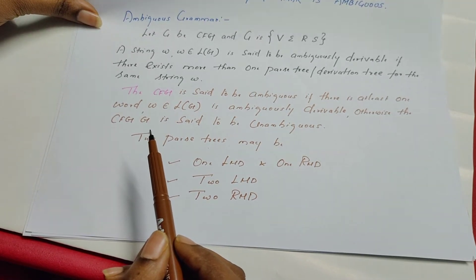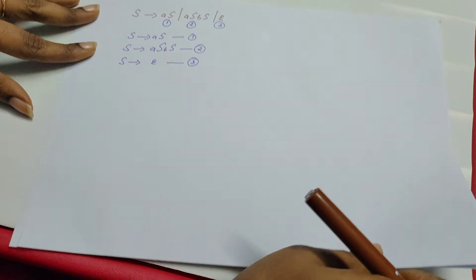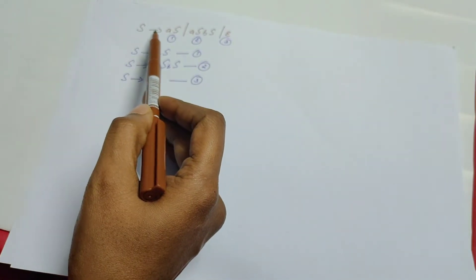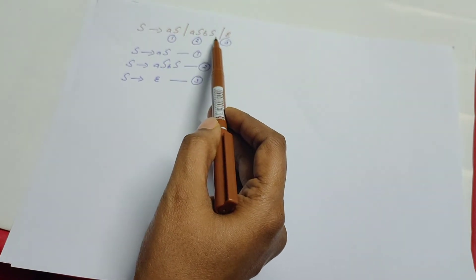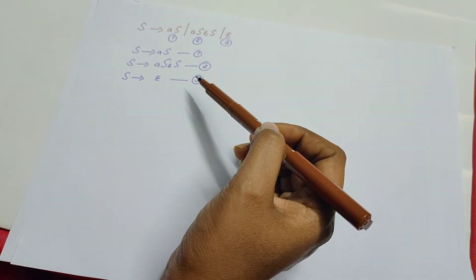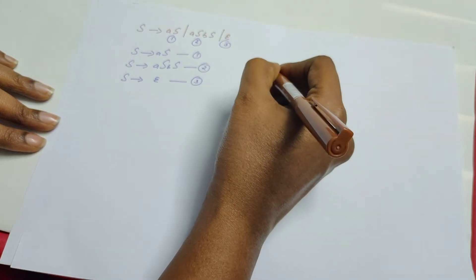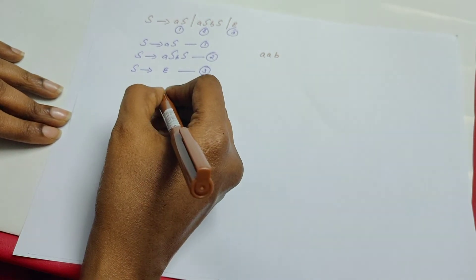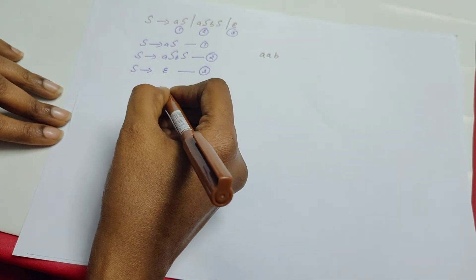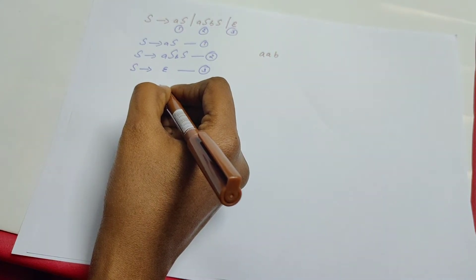Now let us see an example which will further give clarity about what is ambiguous grammar. This is the example I have taken. S derives AS, S derives ASBS, S derives epsilon. There are three production rules and I have numbered these production rules. Now we are going to derive a string — let us derive the string AAB. If I try to derive this string, I should find two ways to derive the same string so that I can get two different parse trees which differ structurally. Then I can say that the grammar is ambiguous.